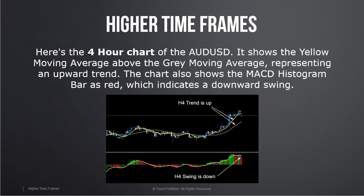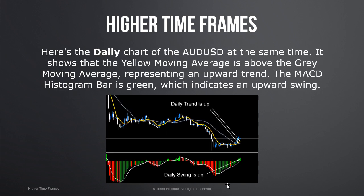Here's the four-hour chart of the Aussie — the AUD/USD. It shows the yellow moving average right above the grey moving average, representing an upward trend. The chart also shows the MACD histogram bar is red, which indicates a downward swing. So the four-hour trend is up, and the four-hour swing is down.